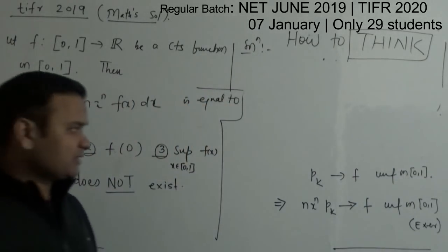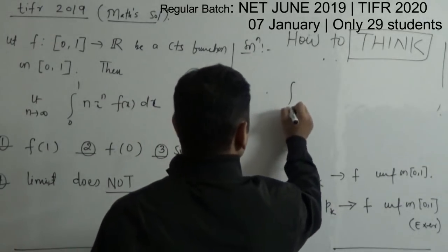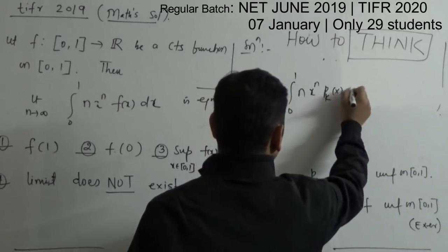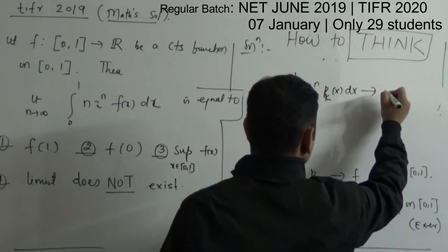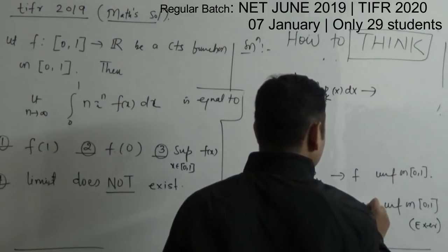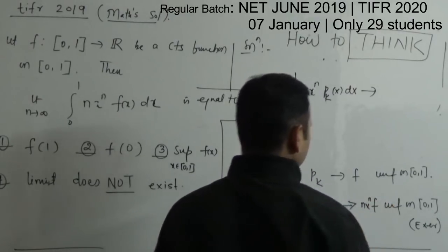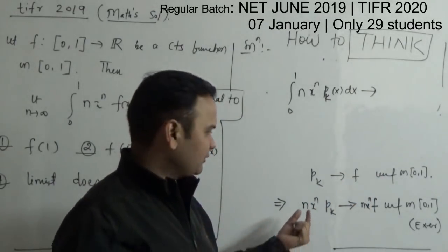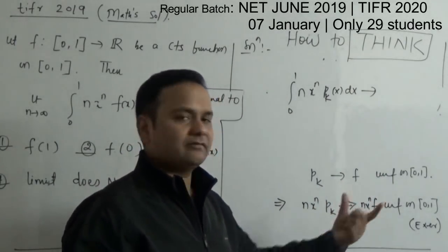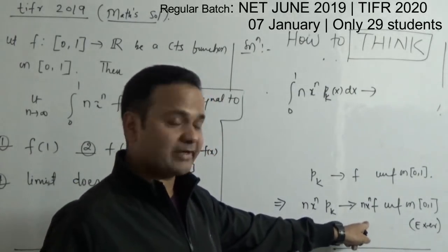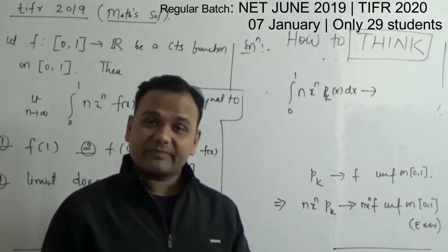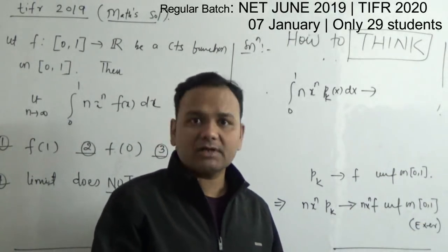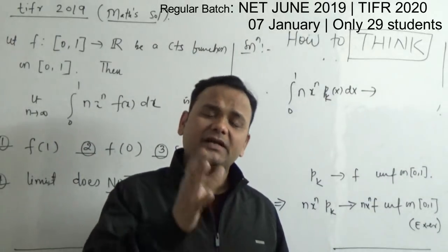If the convergence is uniform, then we can say the integral converges correspondingly. If you multiply both sides by a continuous function and the domain is compact, the uniform convergence is preserved. You can see this is an elementary fact — I leave it as an exercise. Don't expect everything to be done for you; you have to engage with the material yourself. That is how you actually learn.